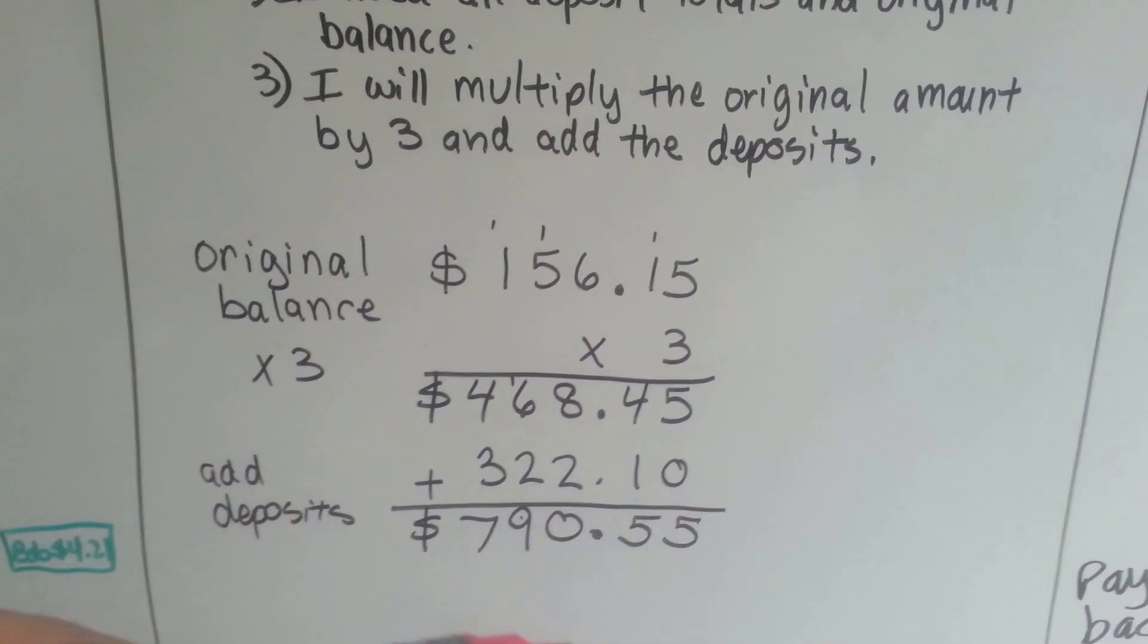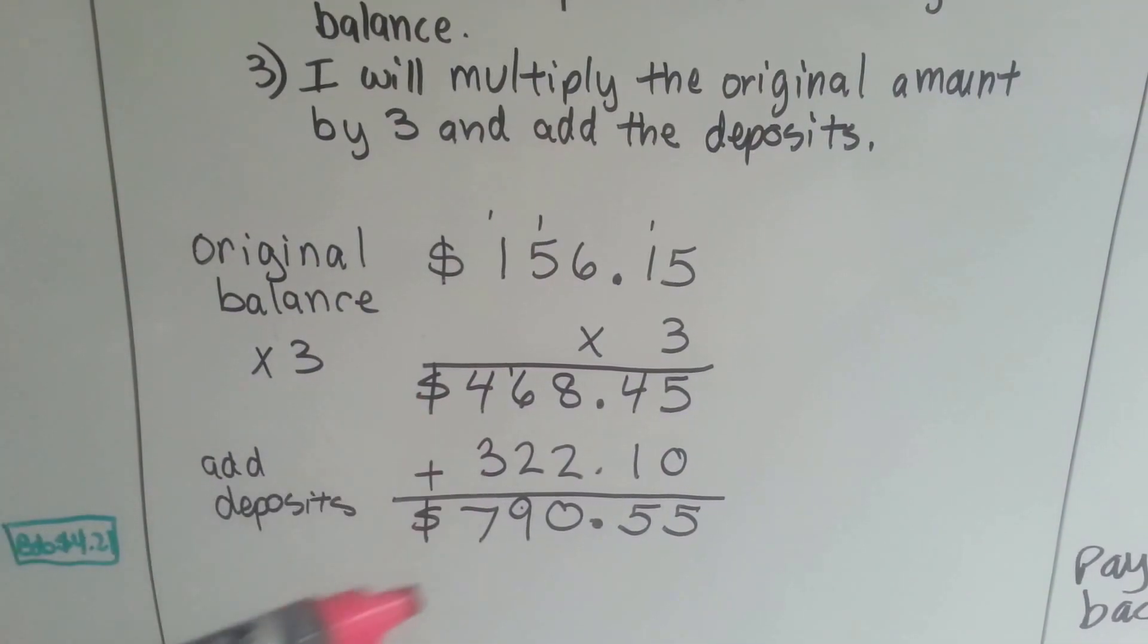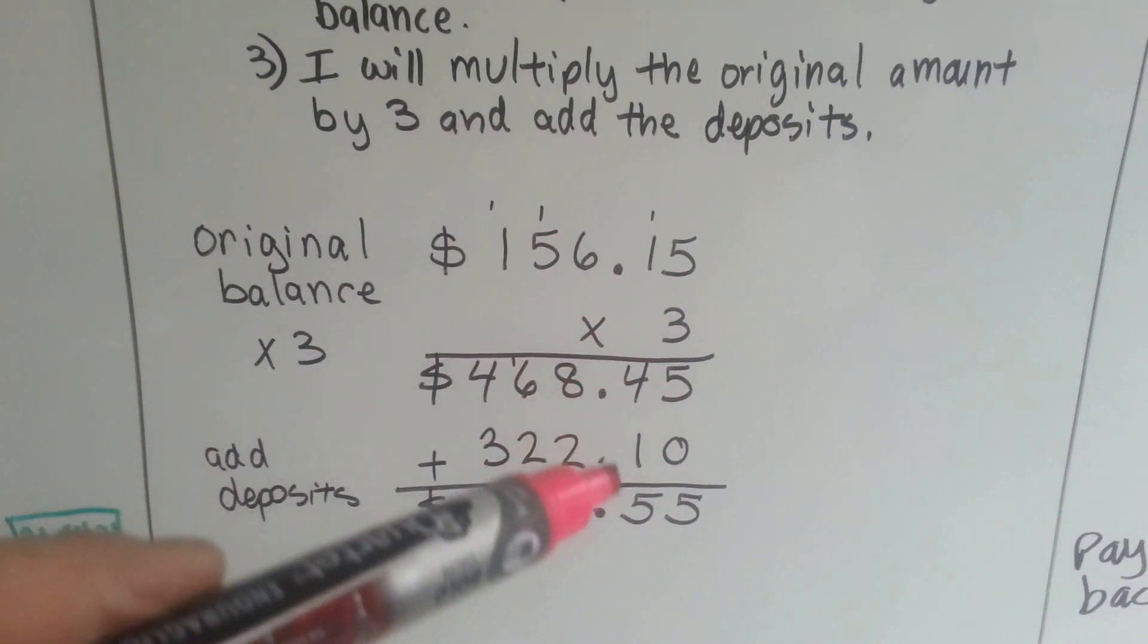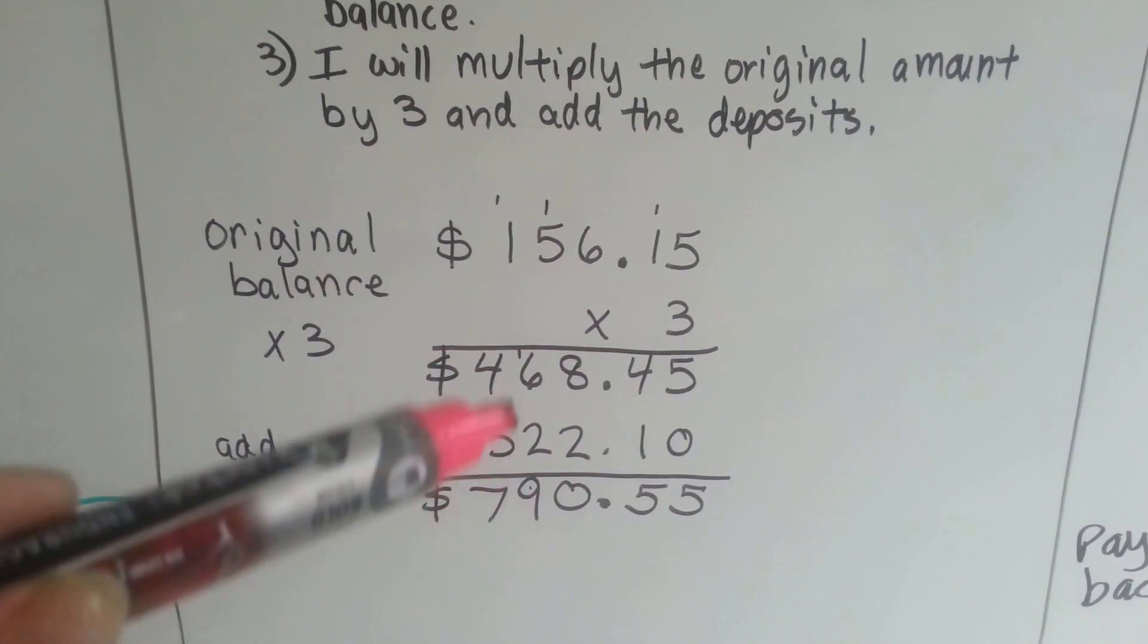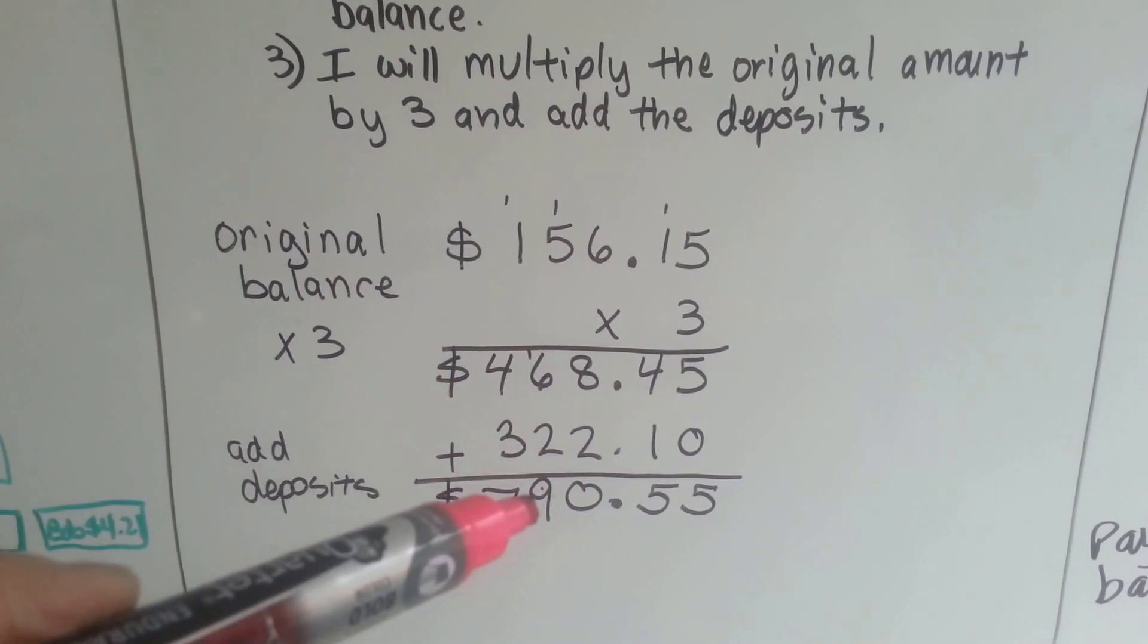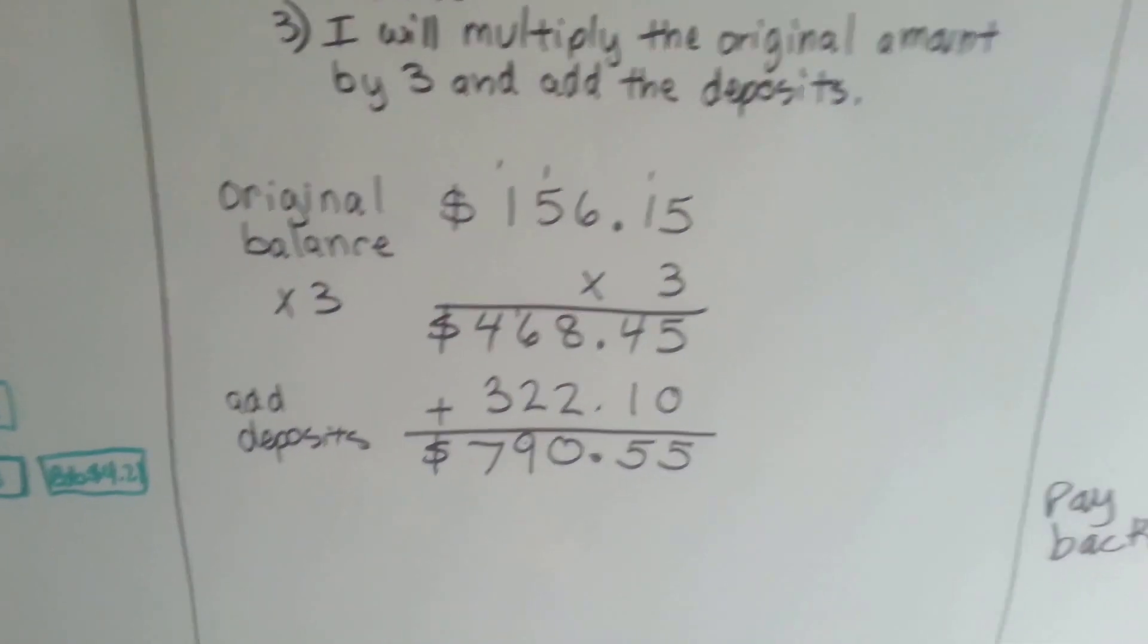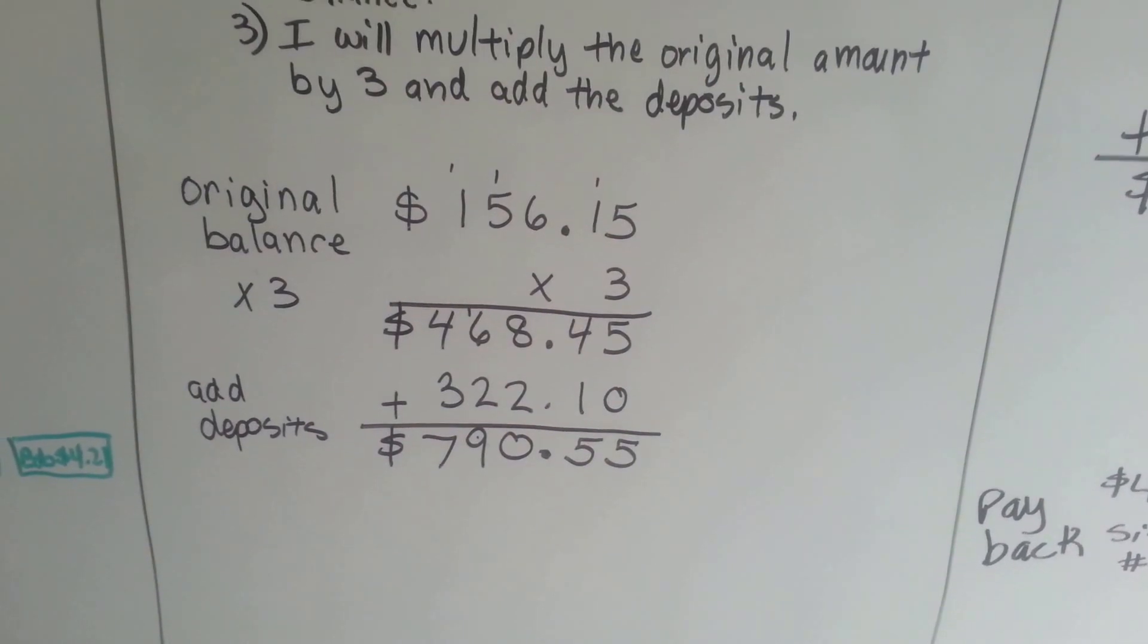Then between June and September she deposited this $322.10. So we just add it. Five and zero is five. Four and one is five. Eight and two is ten. We carry the one. Put the zero down. One and six and two is nine. And four and three is seven. So we know that by September Lisa has got $790.55 in her checking account.